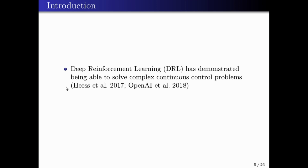Deep Reinforcement Learning has demonstrated success in continuous control problems. Hess and others achieved robust locomotion behaviors that perform well across a suite of tasks. On the other hand, OpenAI created a system that was able to learn humanoid hand locomotion from scratch on a real robot.